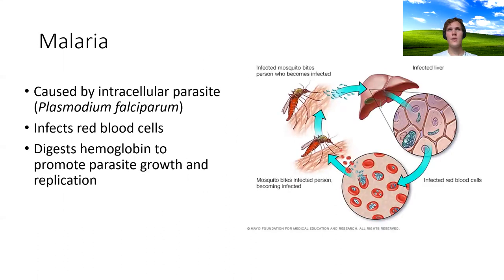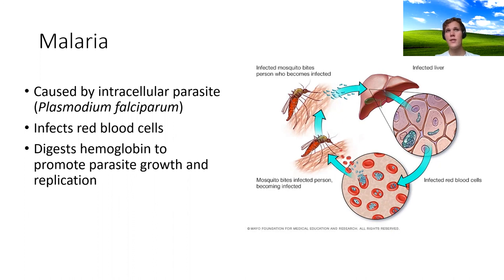Malaria is caused by the intracellular parasite Plasmodium falciparum, which has a stage of its life cycle where it infects red blood cells. During this stage it digests hemoglobin to promote parasite growth and replication, and this is the stage of the life cycle that we're interested in here.